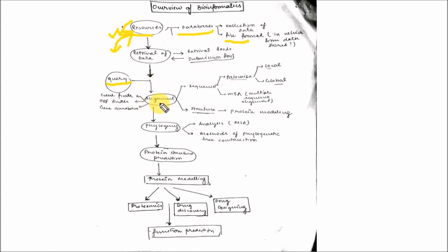And do alignment. You must know alignment. Alignment can be sequence alignment or structure alignment. If it is sequence alignment, then it can be pairwise alignment or multiple sequence alignment. Pairwise alignment can be local alignment or global alignment.